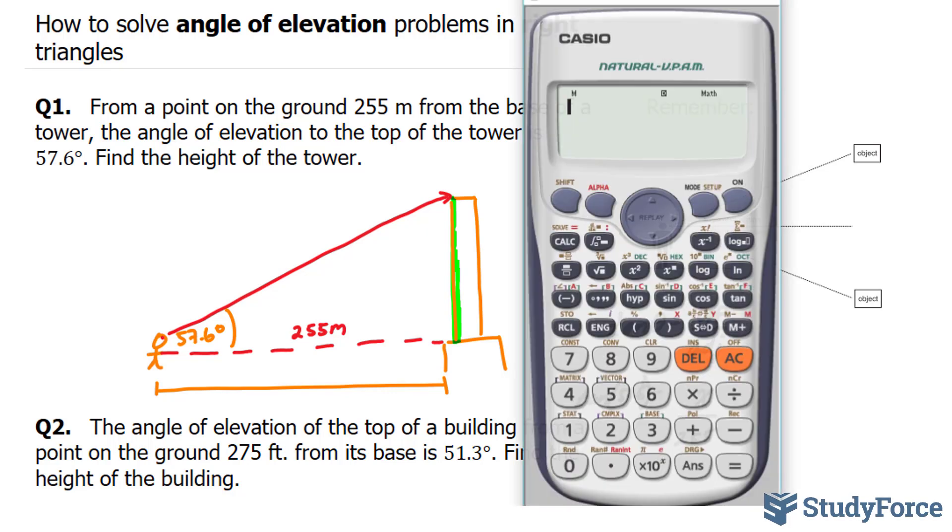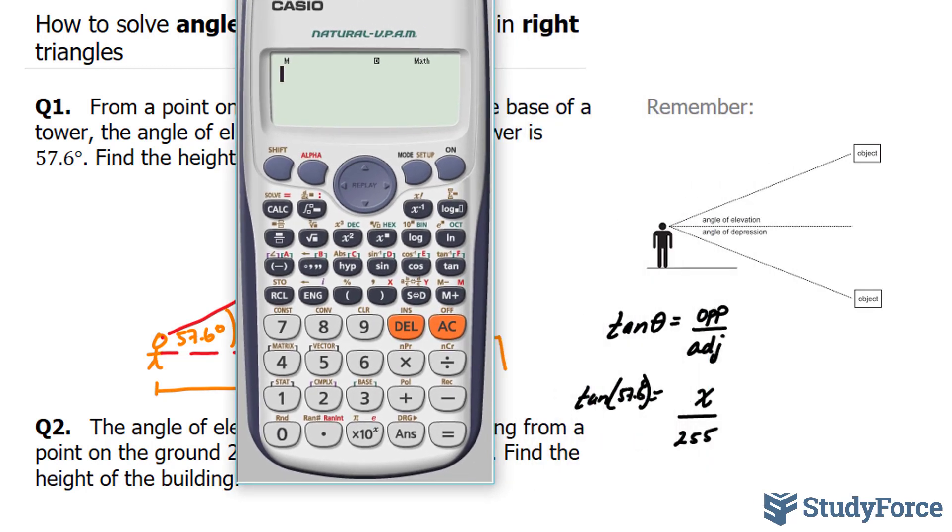Now since we are working with degrees, make sure that your calculator is set to degrees. Mine is already set to degrees. So I need to find x, and to do that, I need to multiply both sides by 255.